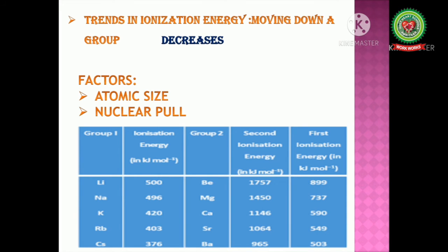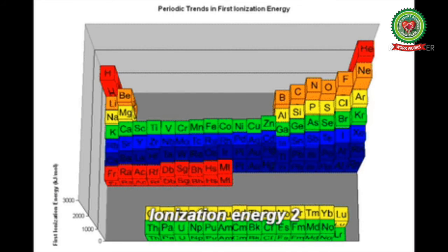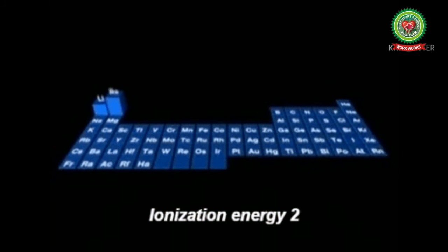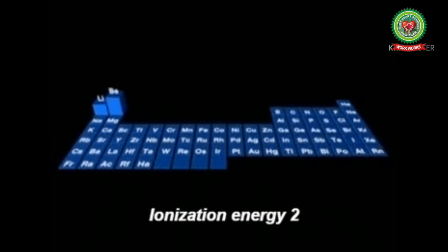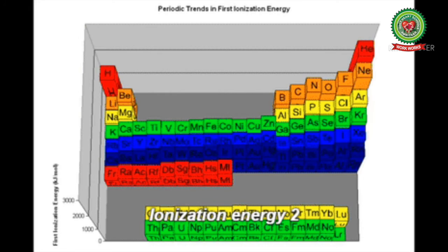Now let's discuss about the trend while moving across a period from left to right. Ionization energy increases. It again depends upon two factors: atomic size and nuclear pull. As we move across a period, atomic size decreases, but due to an increase in electrons, nuclear pull increases. Hence due to the increase in nuclear pull, it is difficult to lose an electron, therefore ionization energy increases.